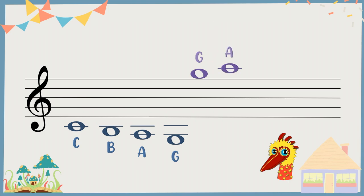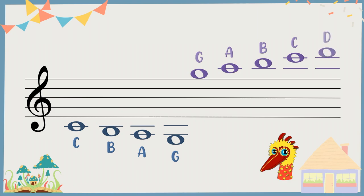In the ledger space above A, draw a note — this is B. Draw a second ledger line. You'll have C, and above that D inside another ledger space.